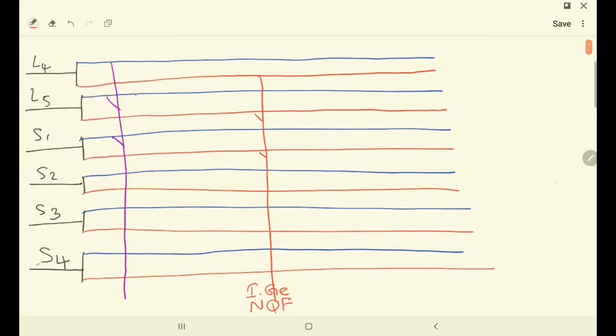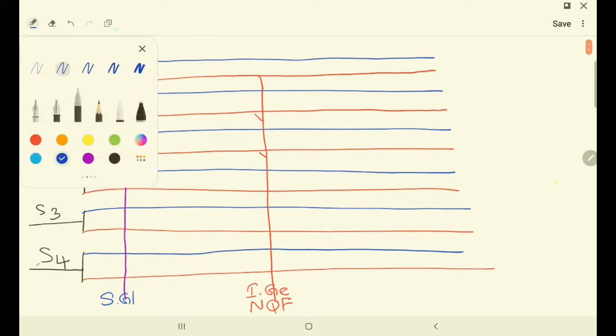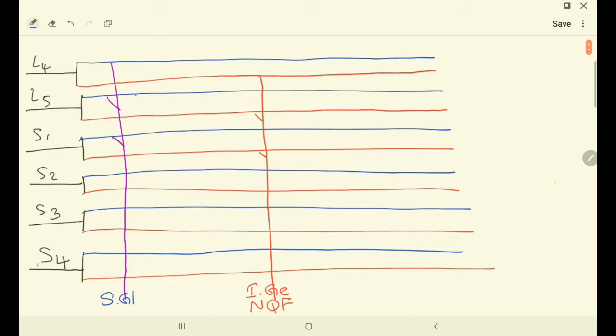Then the next three: L5, S1 and S2. What are the branches? Inferior gluteal, superior gemellus, and nerve to obturator internus. From posterior division, inferior gluteal nerve rises, so I draw like this. And from anterior division, these are superior gemellus and nerve to obturator internus.